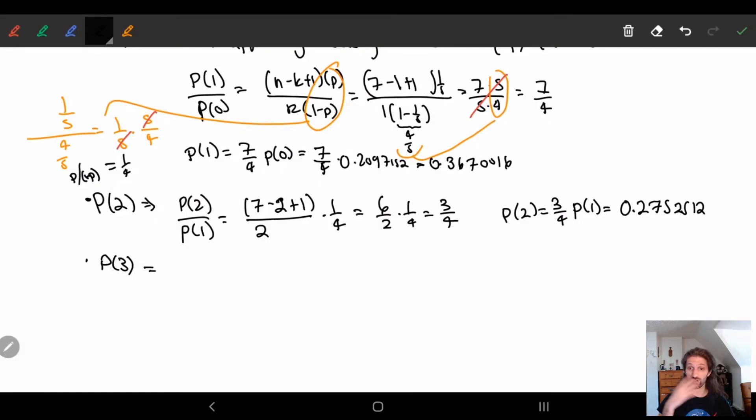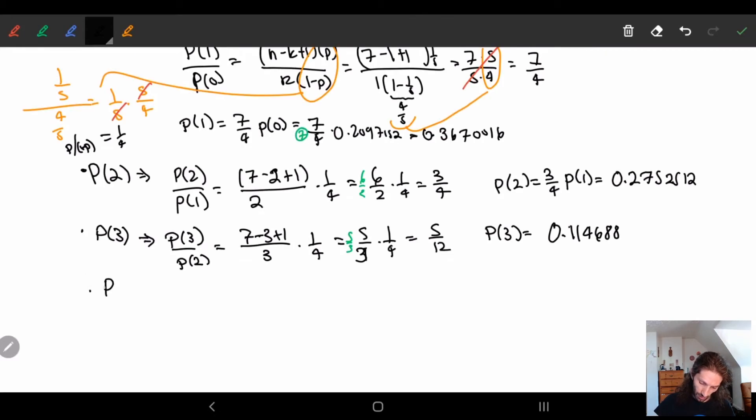Let's try p of three because we need the distribution. I need to look at all of these. p of three gives p of three divided by p of two. So we have seven minus three plus one over three times one-fourth. So here we have five-thirds. Notice how we're getting a nice pattern, right? Here we had seven. Here we have six over two. Now we have five over a third. Five-twelfths. So this implies p of three is equal to 0.1146888.